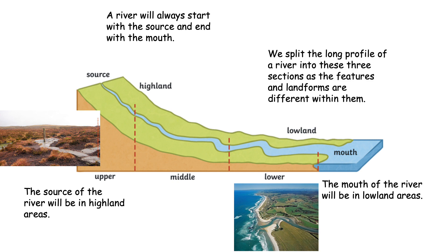We split the long profile of the river into three sections: the upper course, which is the highland areas, the mountains and hills; the middle course, which is somewhere in between — a little bit hilly and not really flat, Blackburn is a perfect example of an area in the middle course; and then the lower course at the very bottom. So just to recap: it starts with the source in the highland areas, the middle course gets slightly less hilly but still undulated, a bit like Blackburn, and the lower course is really flat.